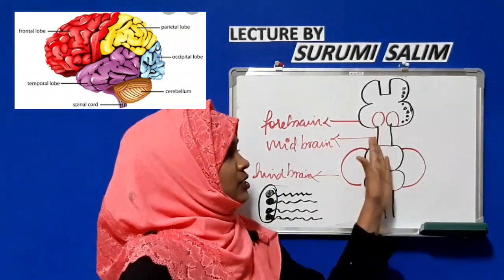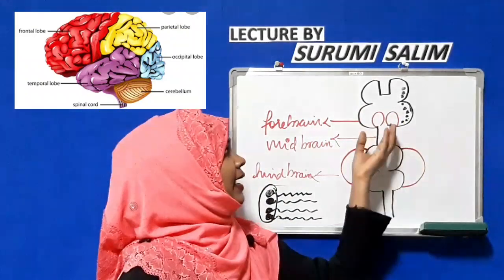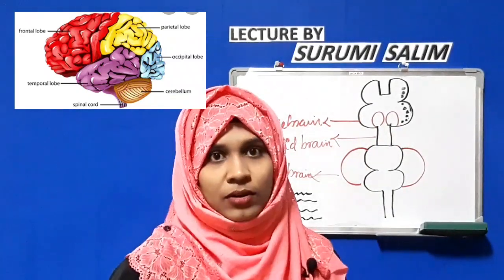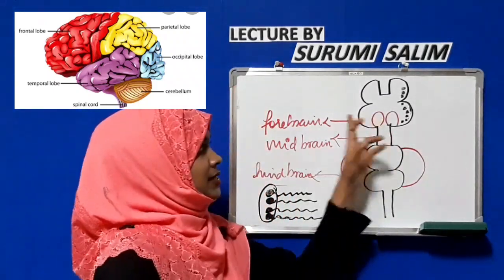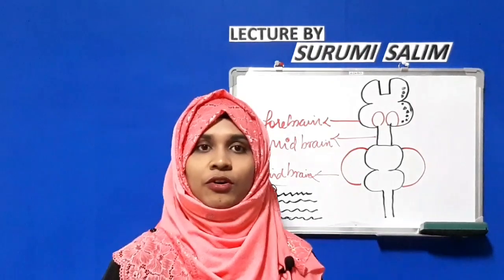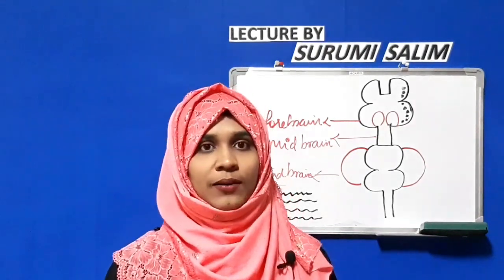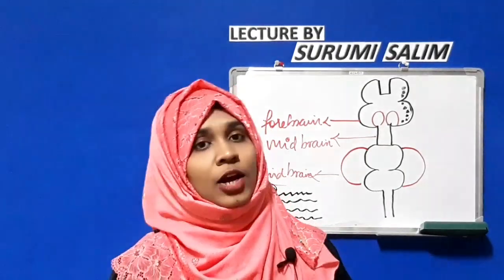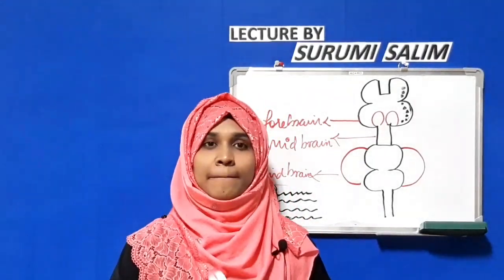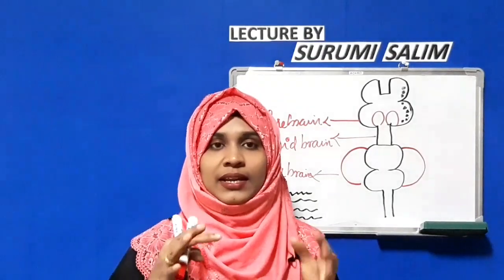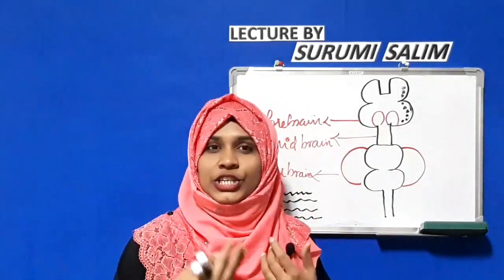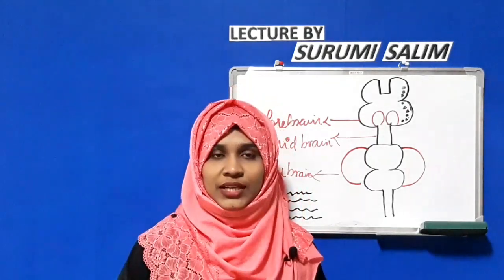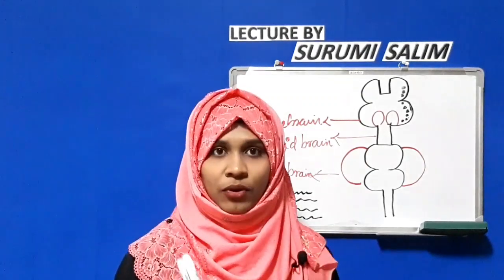The forebrain is also called the proencephalon. The cerebral hemisphere consists of four lobes. The first lobe is the frontal lobe, which is the largest lobe in the cerebral cortex. It is involved in a person's judgment, moral values, abstract thinking, and concentration.